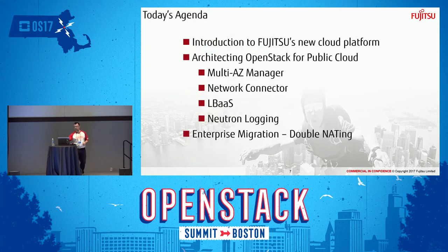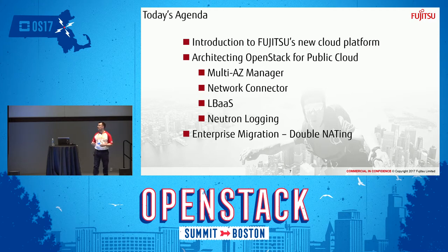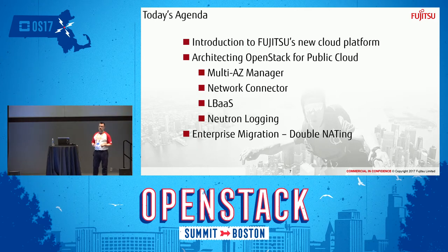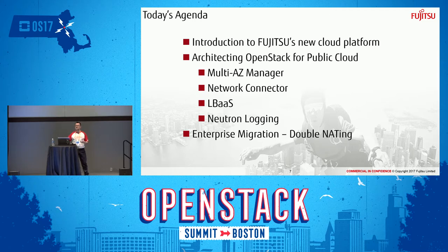Today's agenda: I'll give you a bit of background on Fujitsu and what their cloud has to offer, then we'll go into OpenStack — which is famous as a private cloud platform — and how we're using it to deliver a public cloud offering. That comes with various constraints that anyone who's tried to roll out OpenStack across multiple data centers will know. Finally, I'll talk about enterprise migration — a simple one-slide overview of the architectural discussions I have about how to migrate a thousand servers from one data center into the cloud.